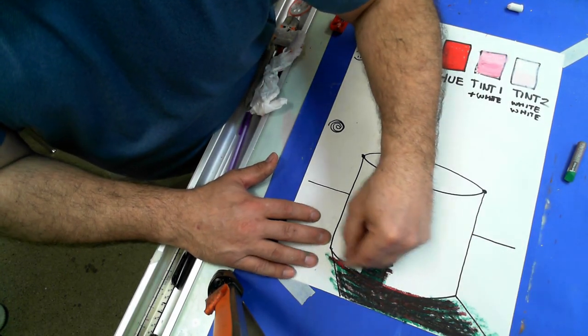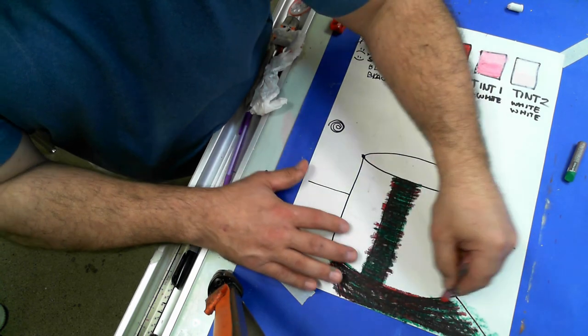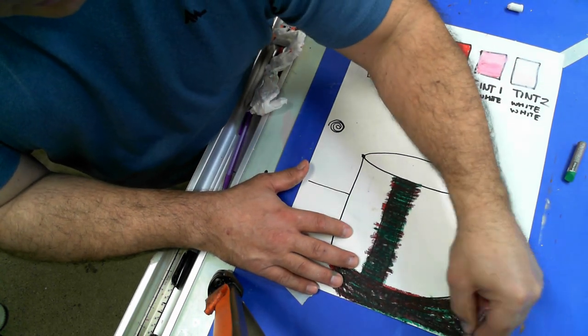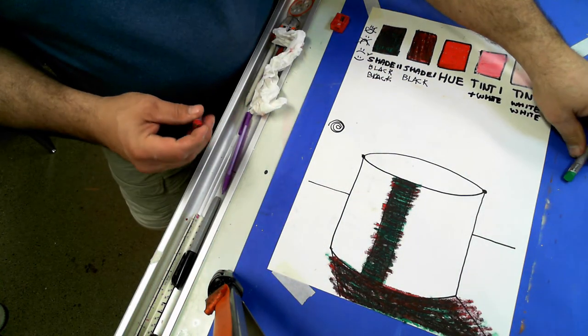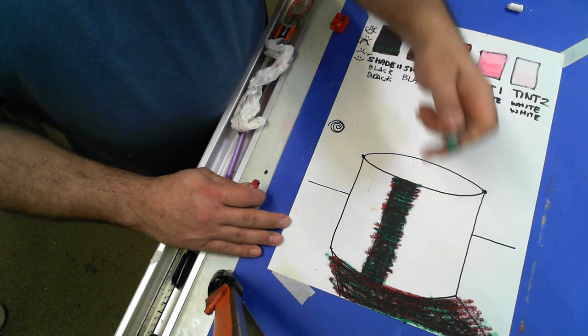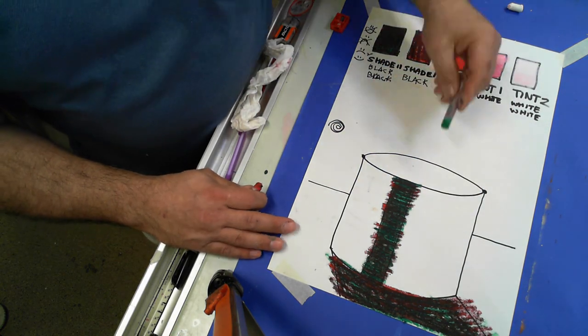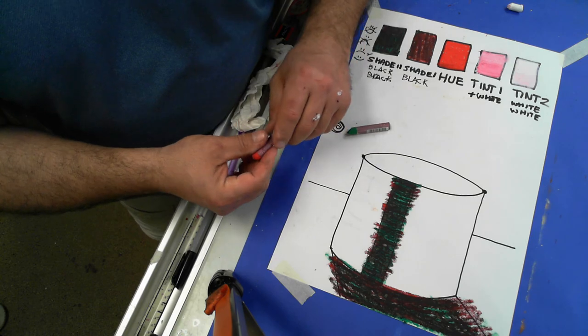Now on the edges it's going to lighten up a little bit, and it won't be as dark. Now I'm going to make this part of my shadow be shade one, so I could put red down first.